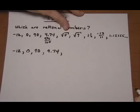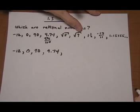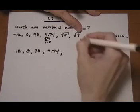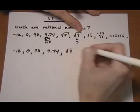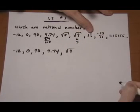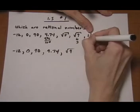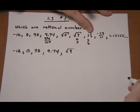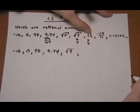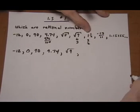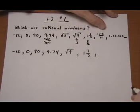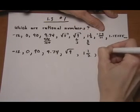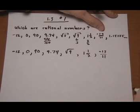Root 5? Non-perfect root — not rational. Root 9? Yep, that's just 3, so root 9 is a rational number. 1 and a half? Well, 1 and a half is the same as 3 halves, so any mixed number can be rewritten as a ratio of integers — it's rational. Minus 13 over 11? That already is a ratio of integers, it's rational.